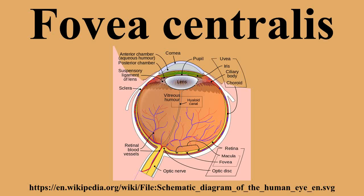The fovea is a depression in the inner retinal surface, about 1.5 mm wide, the photoreceptor layer of which is entirely cones and which is specialized for maximum visual acuity. The fovea also grossly corresponds to the retinal avascular zone. This allows light to be sensed without any dispersion or loss. This anatomy is responsible for the depression in the center of the fovea.